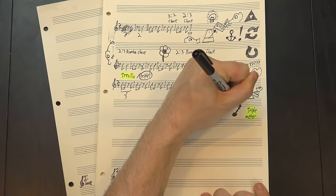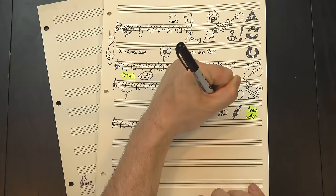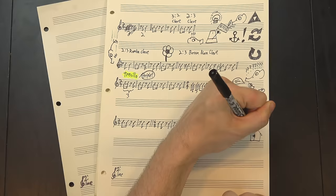If we take the son clave and drop the second sixteenth from each beat, we get this, which has basically the same structure but in triple meter. We can do the same thing to the rumba clave.